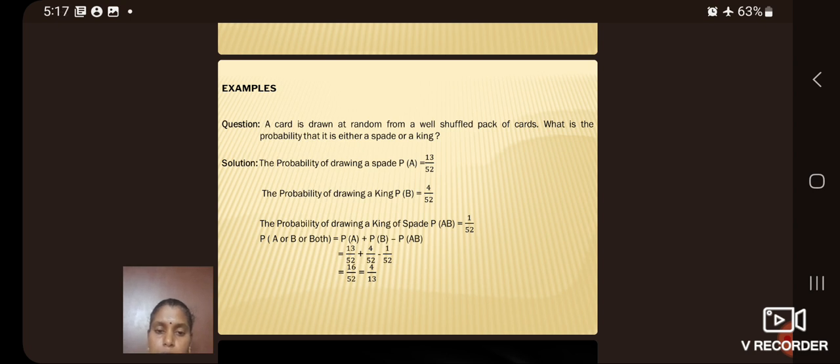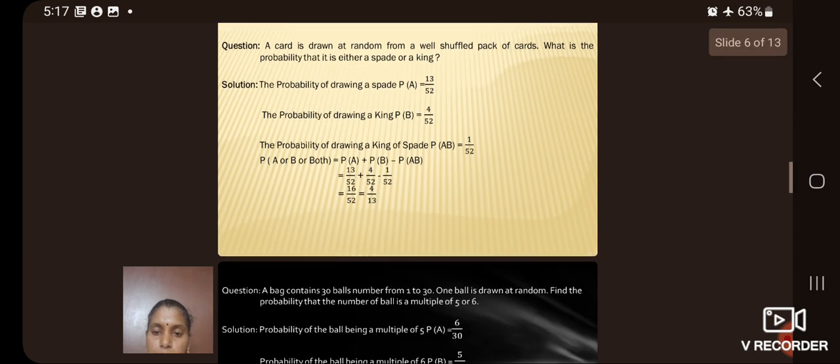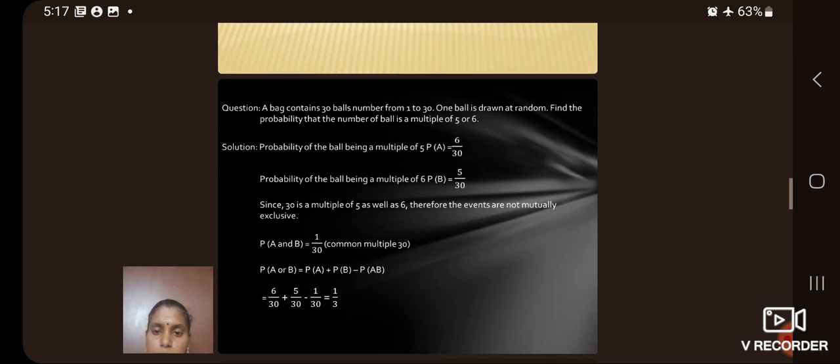And now, let us see the example for addition theorem. A card is drawn at random from a well-shuffled pack of cards. What is the probability that it is either a spade or a king? The probability of drawing a spade is 13 by 52 and the probability of drawing a king is 4 by 52. By applying the theorem, we have P of A plus P of B minus P of A, B that is equal to 4 by 13.